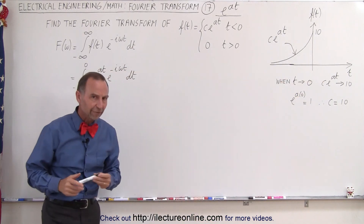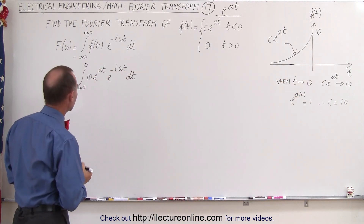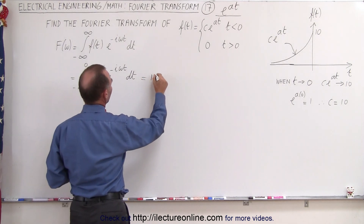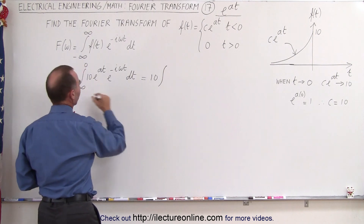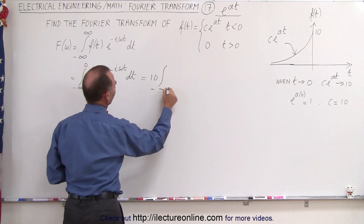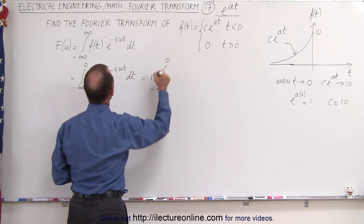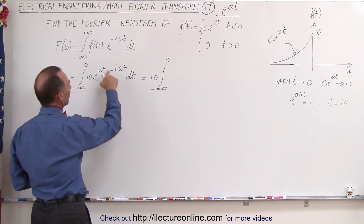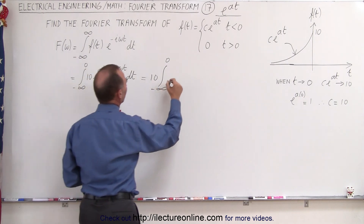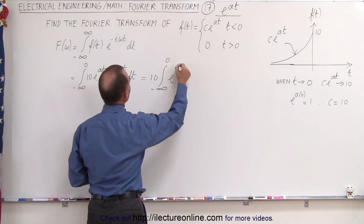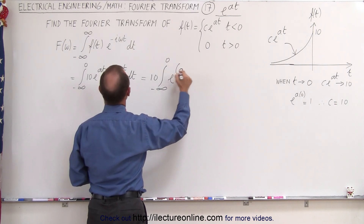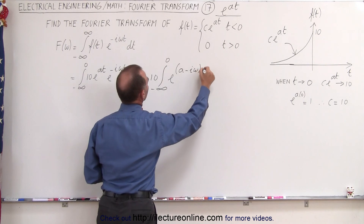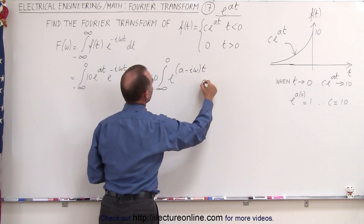Let's figure out what that Fourier transform is equal to. We can take the 10 out, so this becomes equal to 10 times the integral from minus infinity to zero. When we combine these two exponentials — since the bases are the same, we add exponents — that becomes e to the quantity a minus i omega, times t, dt.